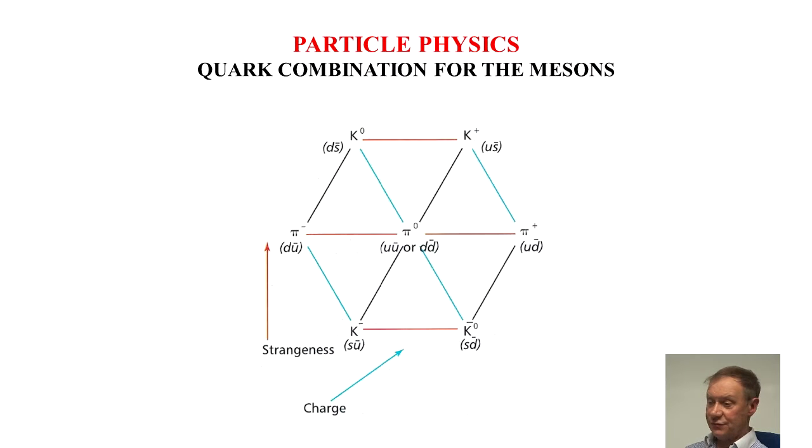The quark combination for mesons is shown in this diagram. Strangeness goes from minus one nought to plus one at the top.